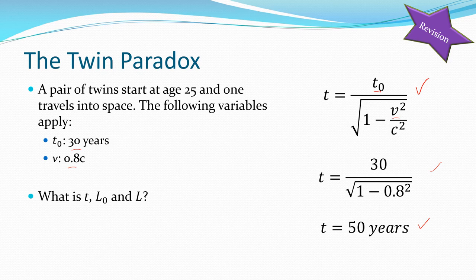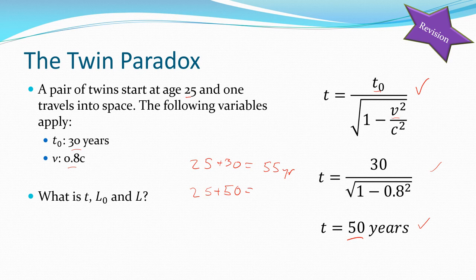Fifty years is the time passing back on Earth. The traveling twin started at age 25, adds 30 years, and comes back at 55 years old. The twin that stayed on Earth started at 25, waited 50 years for the twin to return, and is now 75 years old. They've aged at different rates because time has dilated due to the relativistic speed between the two reference frames.